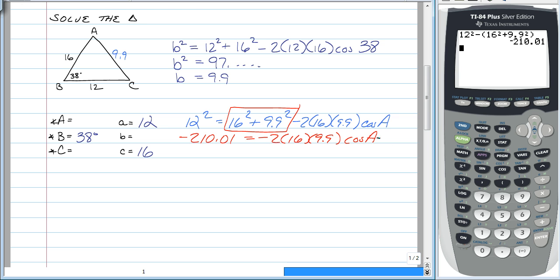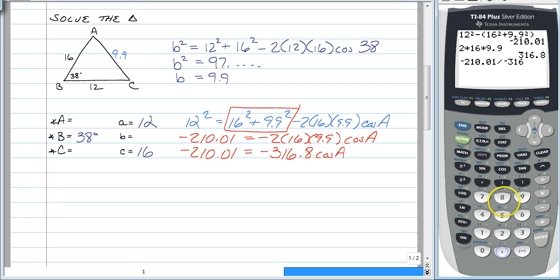And then, of course, what you can do is now you can solve. So what you can do is you can do your 2 times 16 times 9.9, and you will get that that is 316.8. So this is negative 210.01 is equal to negative 316.8 cosine A. So now we do our negative 210.01 divided by our negative 316.8.